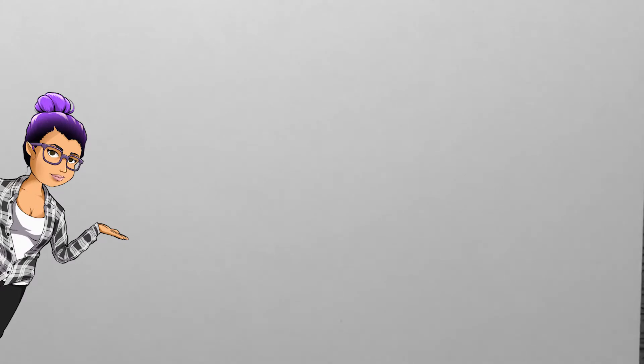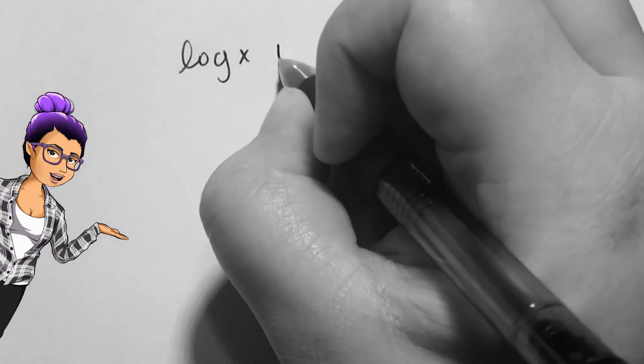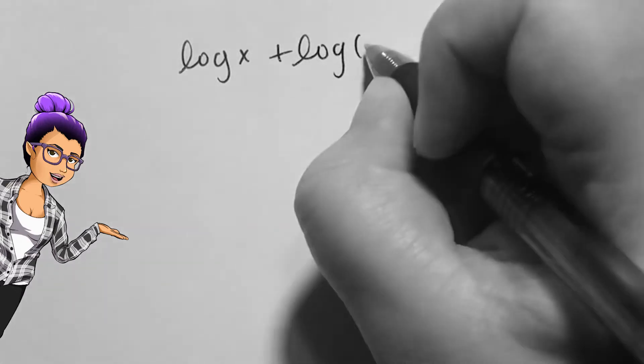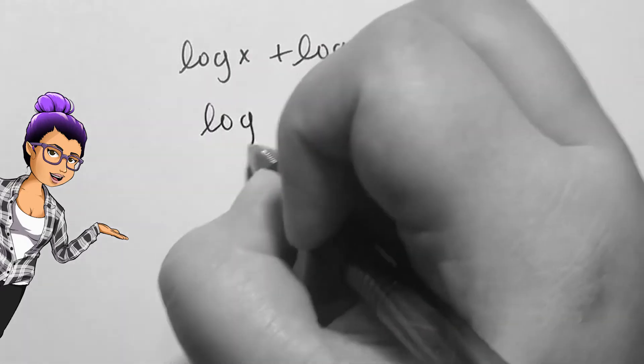Say we have common log of x plus common log of x plus 21 equals 2. I could use a 10 as a base of an exponent to get rid of the logs, but it'll be easiest to do this when there's a single logarithm on the left side.